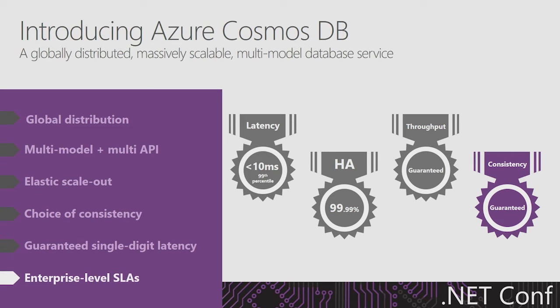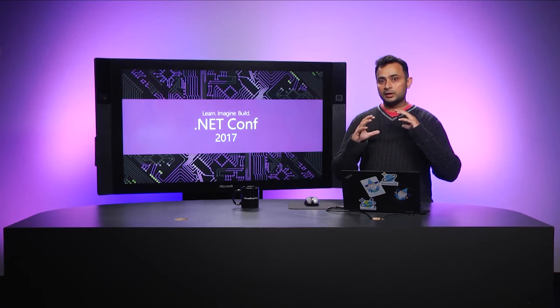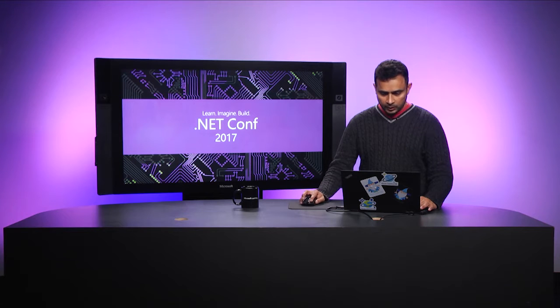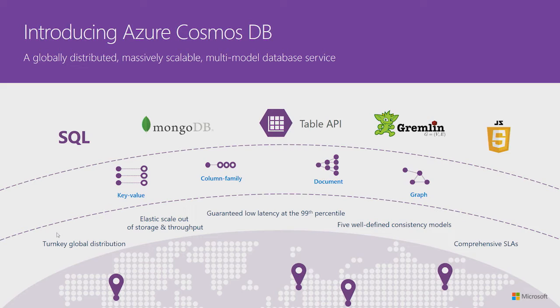Cosmos DB provides comprehensive, industry-leading SLAs. Within a region you get four-nines availability. The service also provides SLAs on consistency — it will never give you a read that doesn't satisfy the given consistency level. The service guarantees your provisioned throughput is available to your application. It also guarantees latency: reads will always complete under 10 milliseconds and writes will always complete within 15 milliseconds at the 99th percentile.